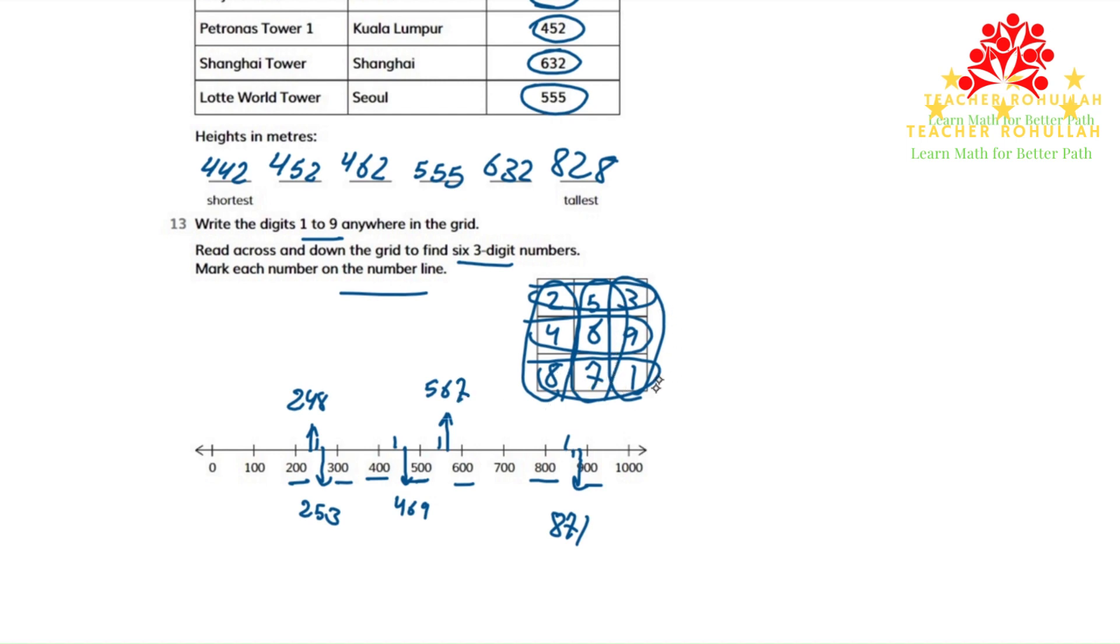And the last number down here is 391. 391 is between 300 and 400. The number halfway between them is 350. So 350 and 391 can be somewhere here. 391.